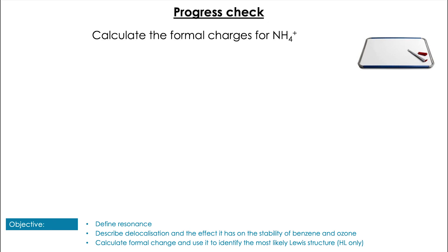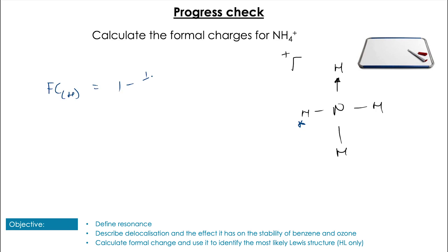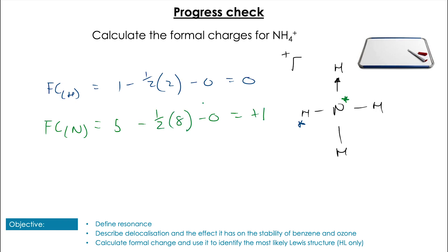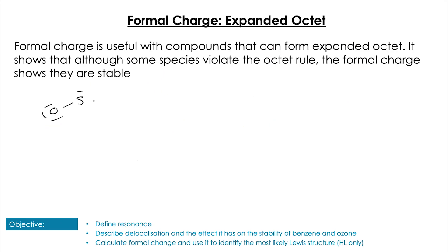Try the same thing for the ammonium ion, NH4 plus — pause the video to have a go. Once we've drawn the Lewis structure we see nitrogen is single bonded to four different hydrogens. Each hydrogen has a formal charge of 1 minus half of 2 minus 0, which is zero. The formal charge of nitrogen is 5 minus half of 8 minus 0, which is plus one — and that makes sense because we have an overall charge of plus one on this ion.